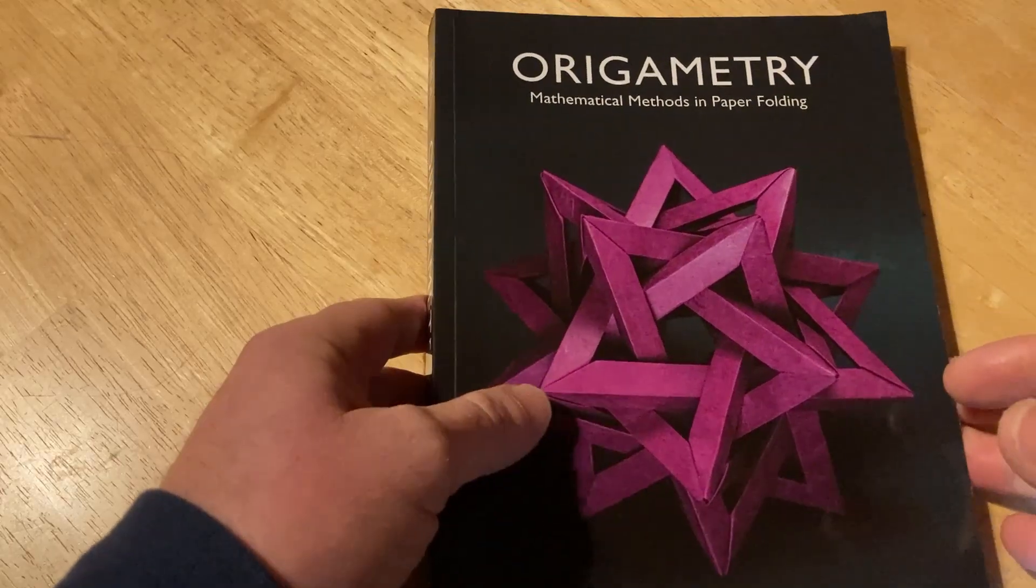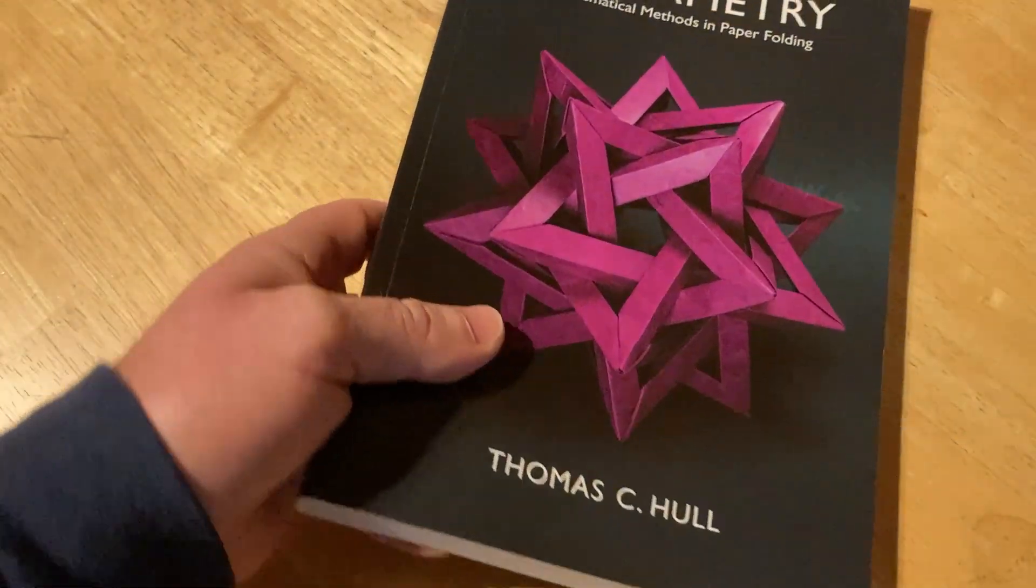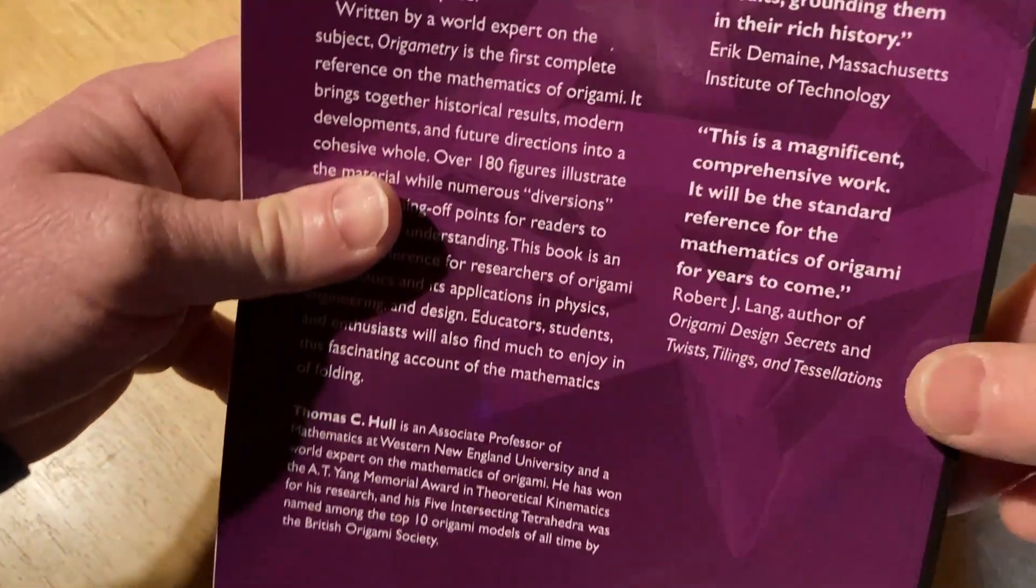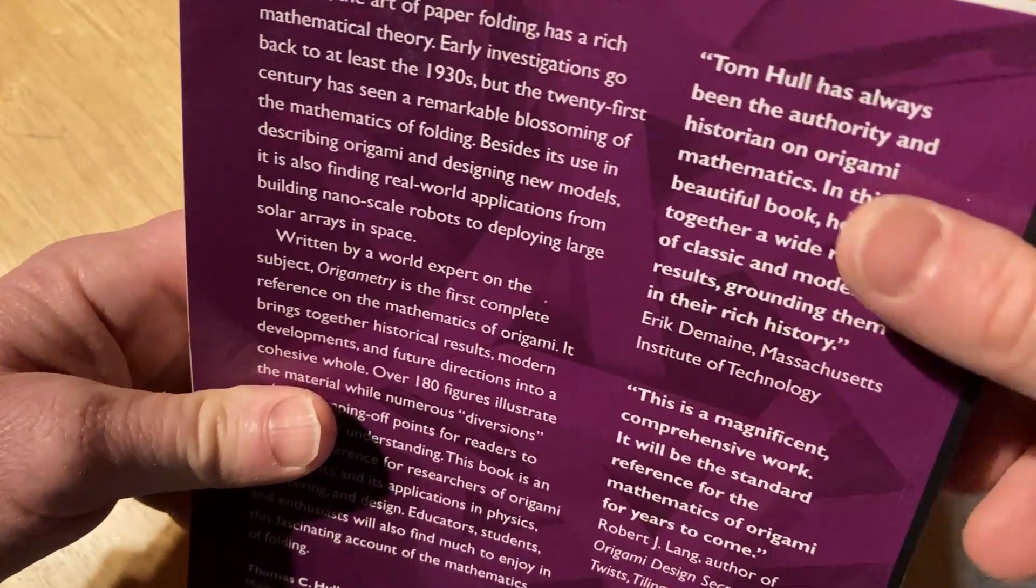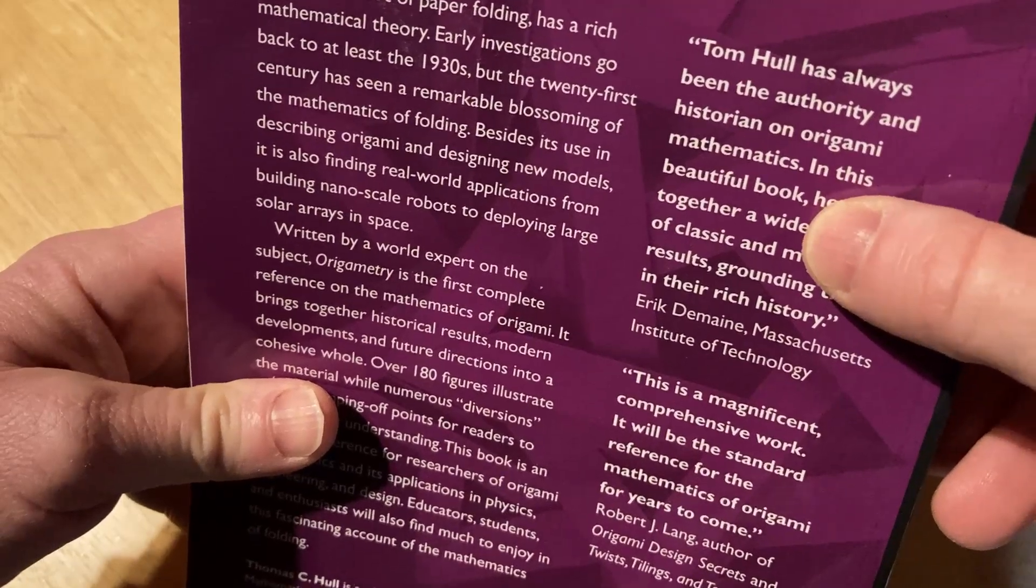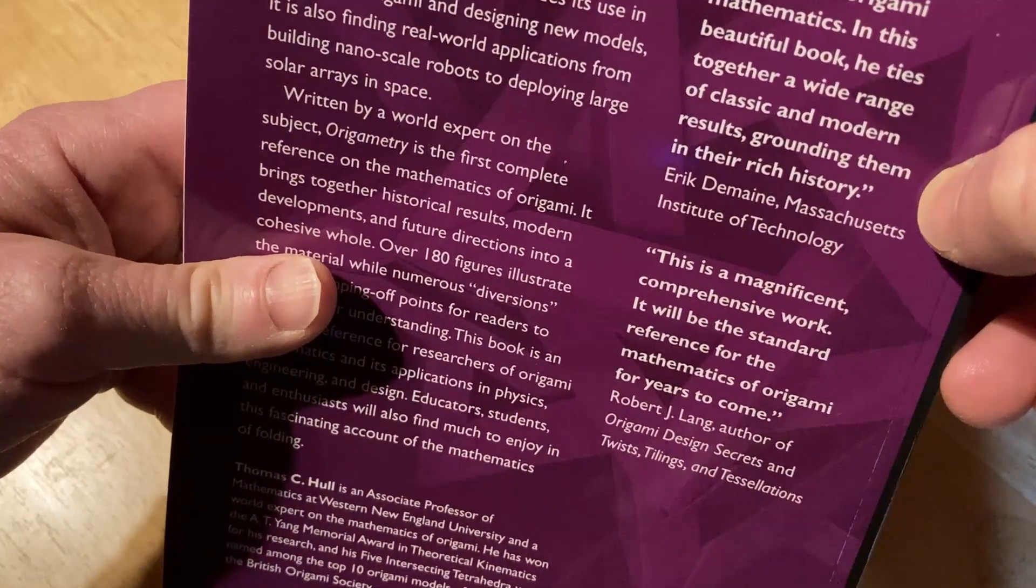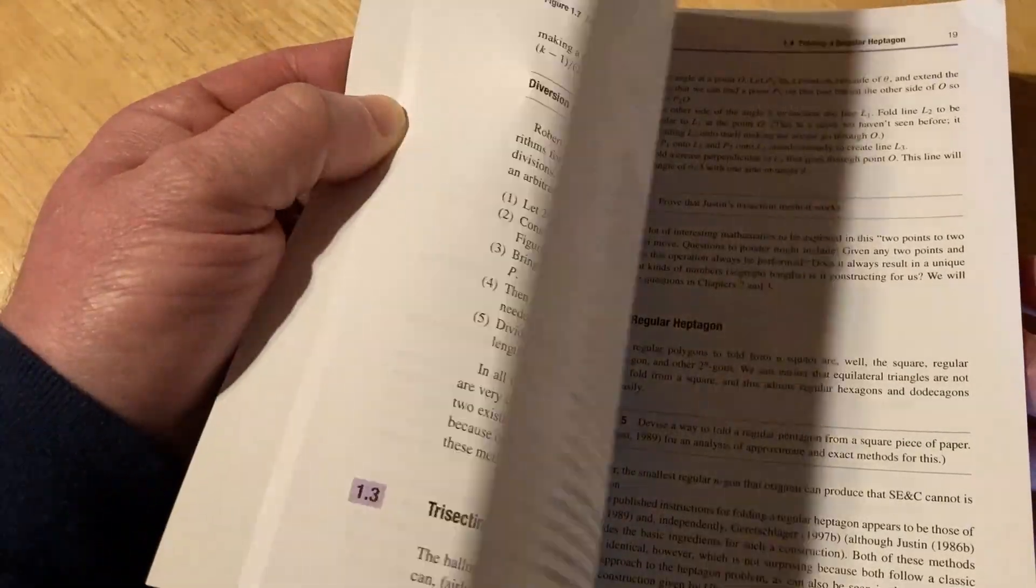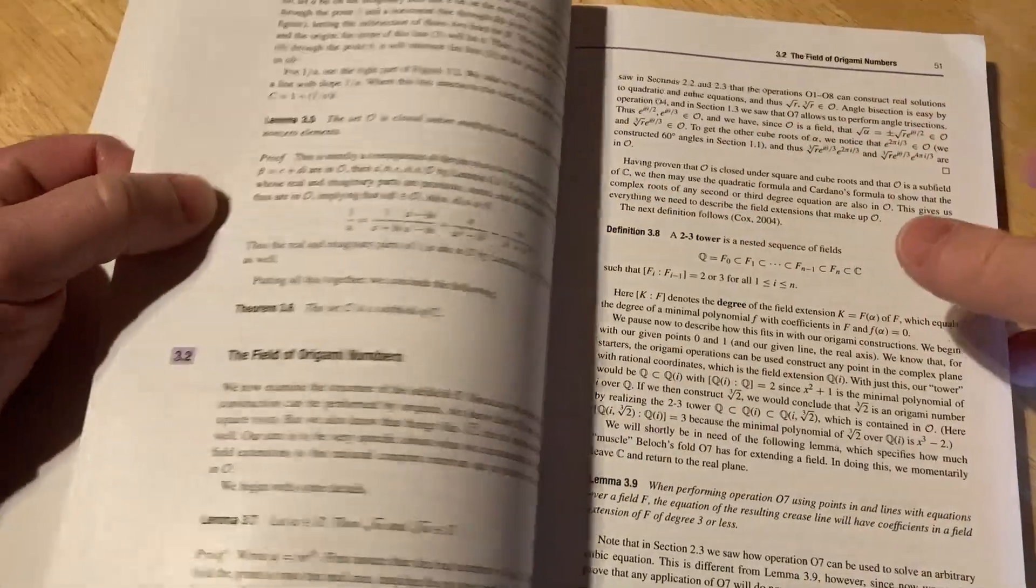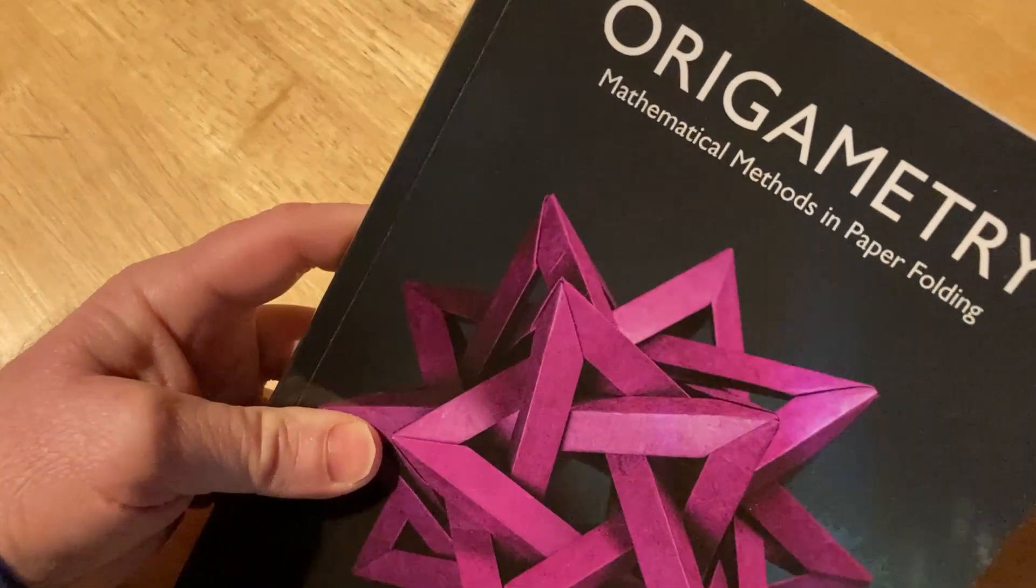This is Origometry, Mathematical Methods in Paper Folding by Thomas C. Hall. Let me show you the praise that this book has. This book is pretty much written by the authority. Tom Hall has always been the authority and historian on origami mathematics. In this beautiful book, he ties together a wide range of classic and modern results, grounding them in their rich history. This is pretty much going to be the standard for years to come probably in the field of origometry. This is a really interesting book. If you are into origometry or you're thinking about exploring some interesting mathematics with paper folding, this is some pretty serious mathematics. This is the book to get if you're interested in learning the mathematics of paper folding.